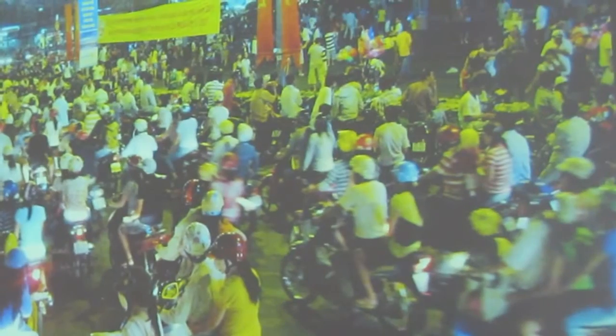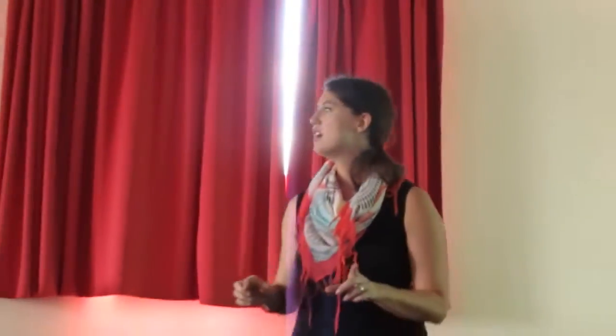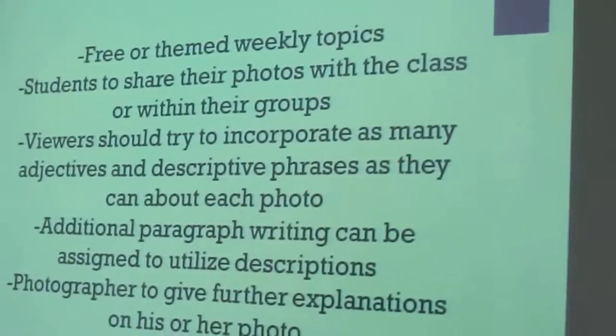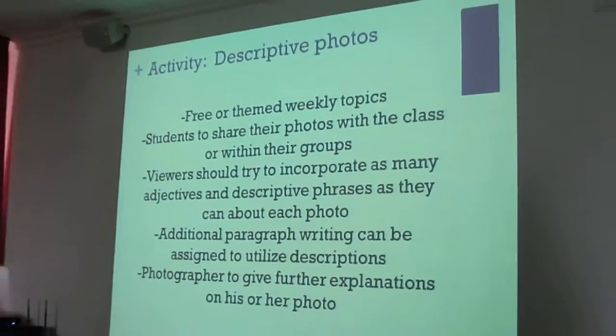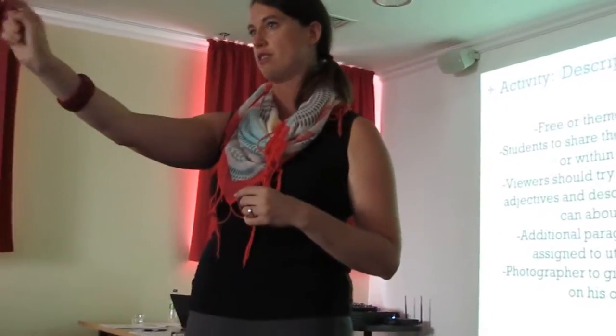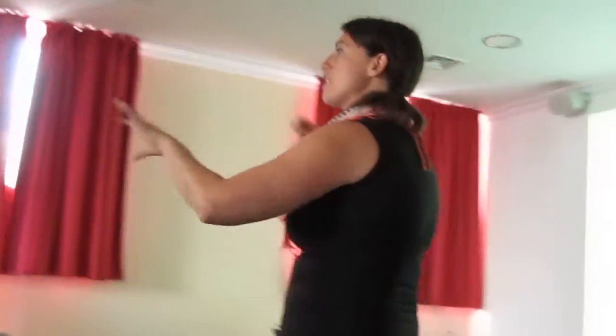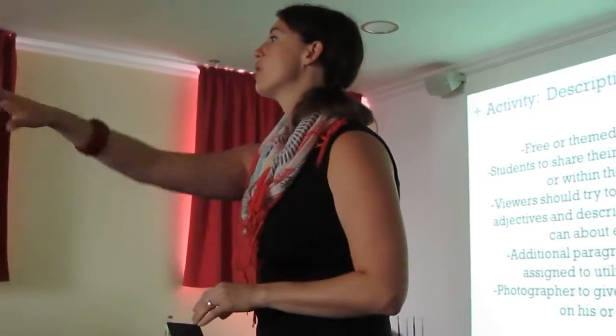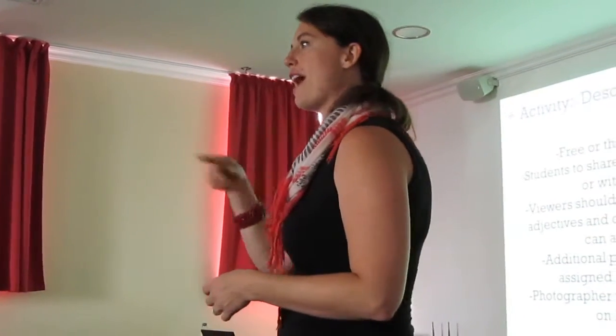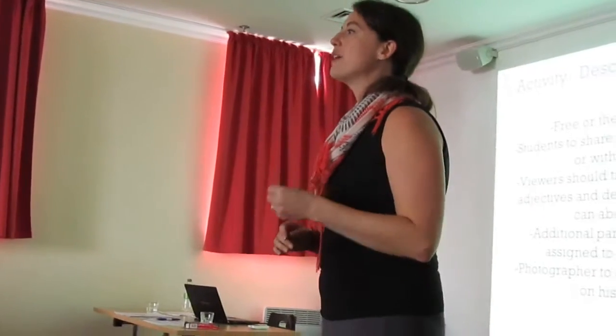Look at this picture. In your pairs, you have one minute — write as many adjectives as you can about this photo. That's the activity: make a little calendar, and each week one student brings in their own photo — a print or emailed to you. That student comes to the front and says: 'Here's my photo, you have one minute, write as many adjectives as you can.' The student becomes the teacher.